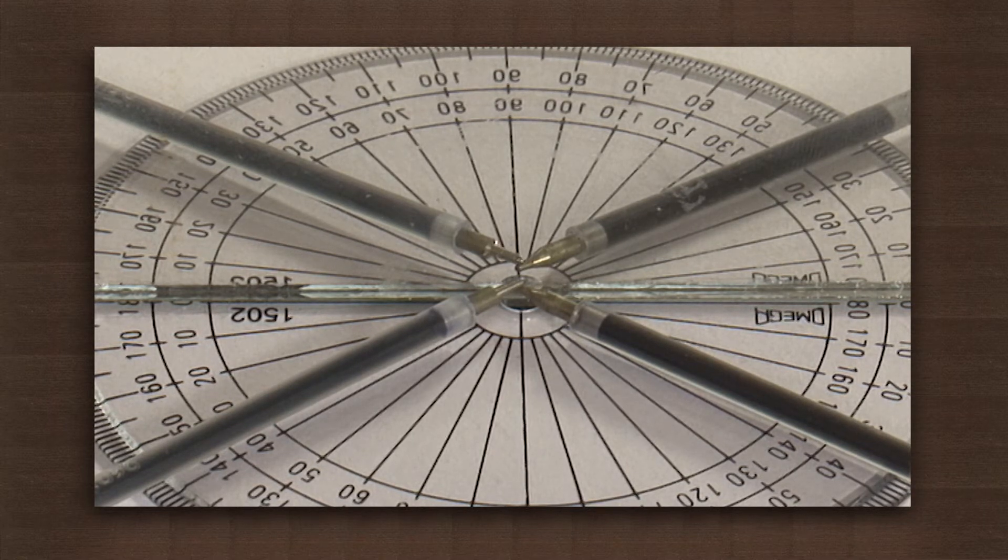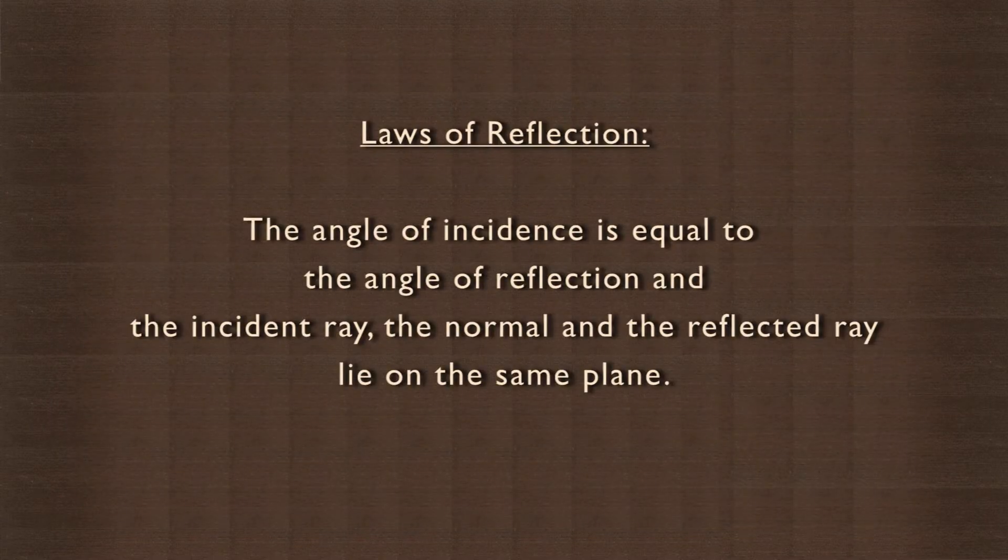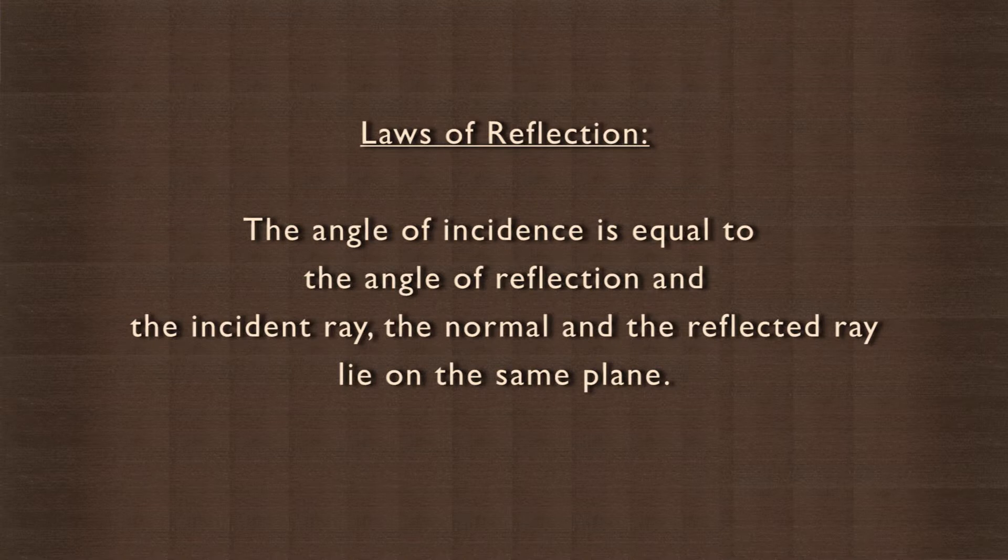These two are the laws of reflection which state that the angle of incidence is equal to the angle of reflection, and that the incident ray, the normal, and the reflected ray lie on the same plane.